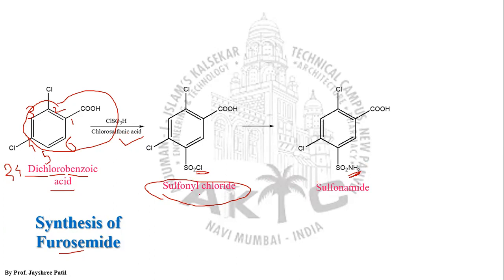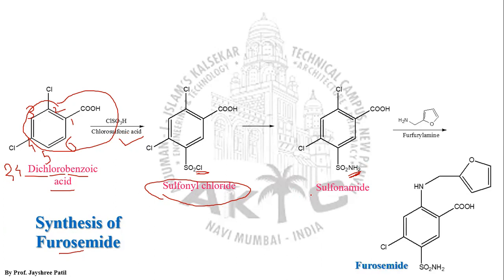The sulfonyl chloride is then treated with ammonia, converting the chlorine to NH2 — that is, sulfonyl chloride is converted into a sulfonamide. The next requirement is furfurylamine, because as the name 'furosemide' indicates, it contains a furan ring, which comes from furfurylamine.